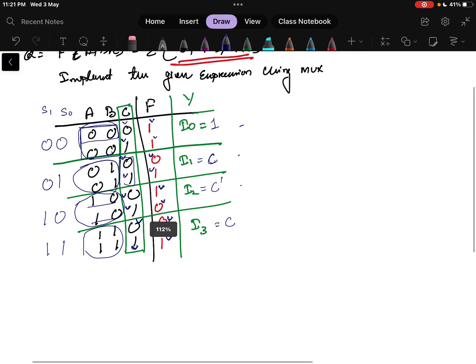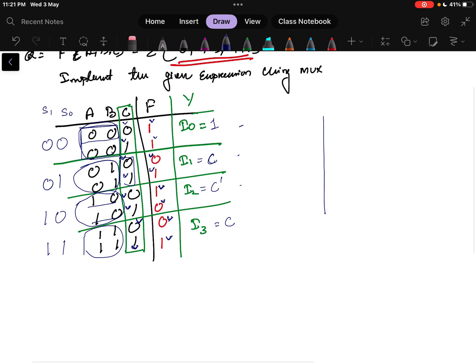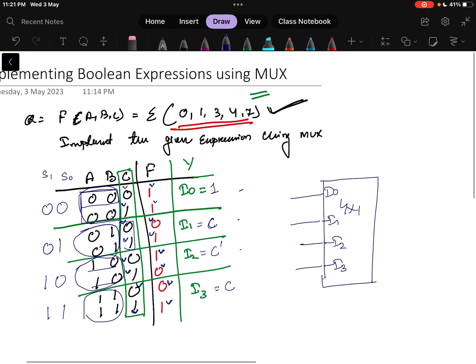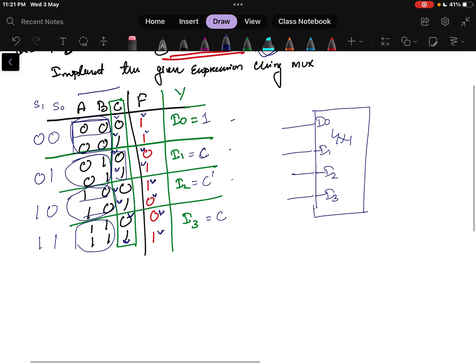Now how to design the circuit. For the circuit I need a 4x1 multiplexer. I will write the inputs here I0, I1, I2, and I3, so 4 inputs are there. For my logic point of view, from the question point of view inputs are A, B, and C. I will write here A, B, and C, these are my actual inputs I need.